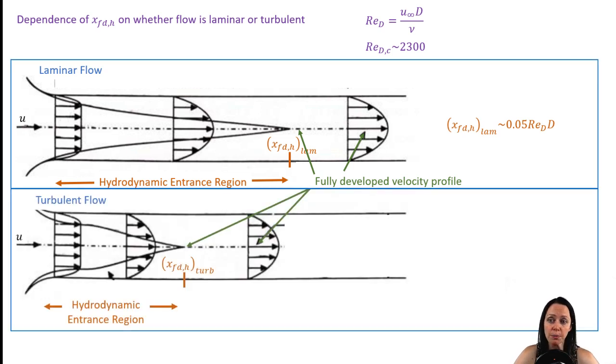If the flow is turbulent, note that the entrance region is shorter. And also note that the velocity profile, while still parabolic shaped, is a little more blunter with turbulent flow. For the purposes of our class, we'll consider that the flow has become fully developed at 10 diameters.